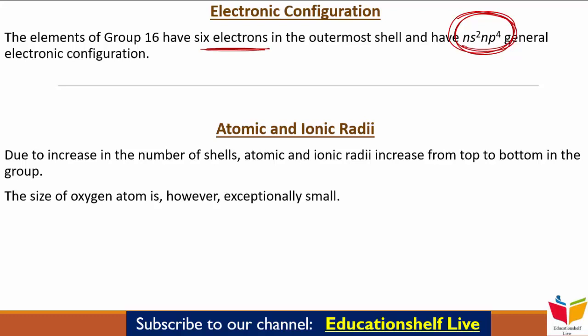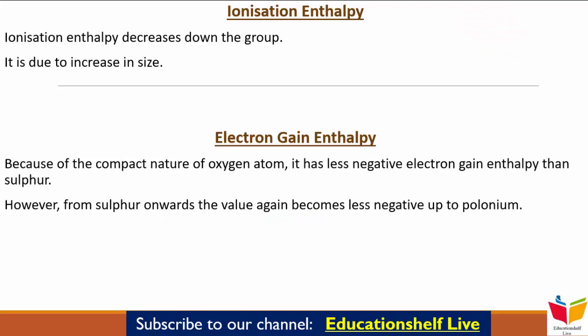Atomic और Ionic Radii के अगर हम बात करें, तो क्योंकि number of shells बढ़ती जाती हैं, इसलिए Atomic और Ionic Radii जब हम ऊपर से नीचे जाएंगे तो बढ़ती जाएगी। However, जो size होता है Oxygen atom का, वो exceptionally small होता है। इसका reason क्या है — वो आप लोगों को comment section में बताना है।